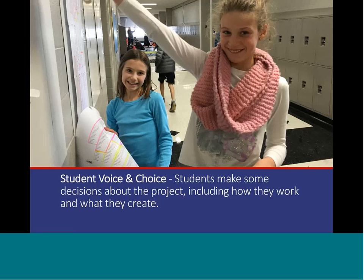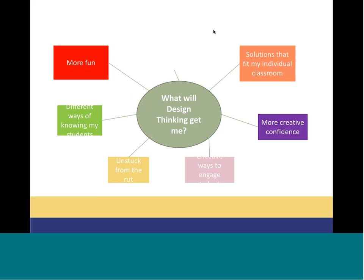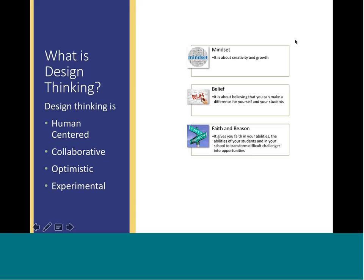With creative confidence comes voice and choice. Students need some decision-making involved in the project, including how they work and what they create. Design thinking enables that to happen — it gives different solutions to fit the classroom and allows students to have a voice. If students are design thinkers, they know they're iterating over time. There's more creative confidence because of that, more effective ways to engage students, different ways for teachers to know their students, and quite frankly, it's more fun. With design thinking for voice and choice, we need to consider mindset, belief, and faith and reason.